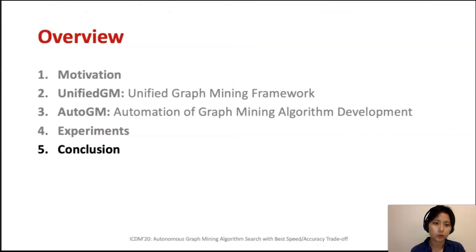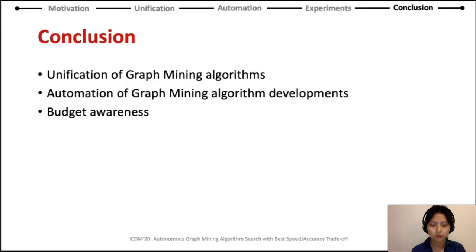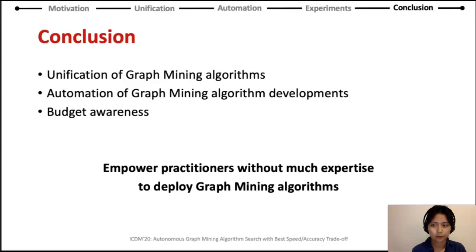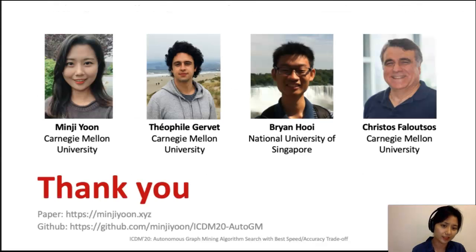We have shown the effectiveness of AutoGM on real-world graphs. In conclusion, in this paper we unify various graph mining algorithms under the Unified GM framework, then automate the graph mining generation problem to generate the optimal graph algorithm given the user's resource budget. We hope to empower practitioners without much expertise to deploy graph mining algorithms and take advantage of the great research done in this field. Thank you for listening — you can find our paper and code at the URL below.